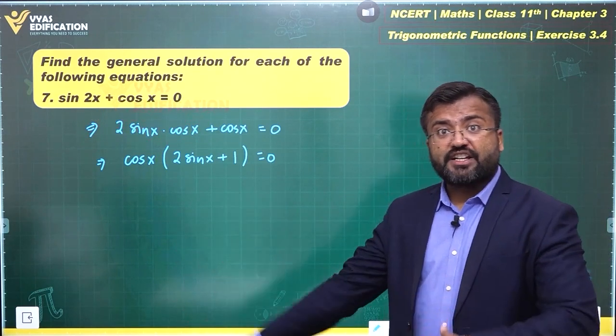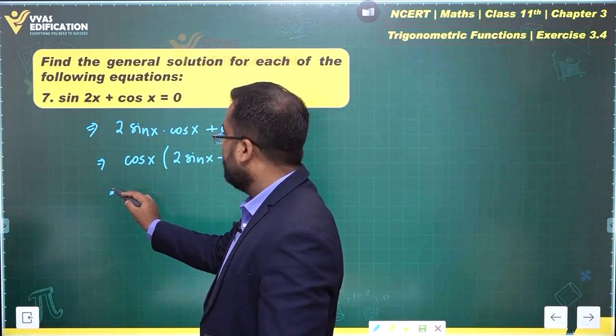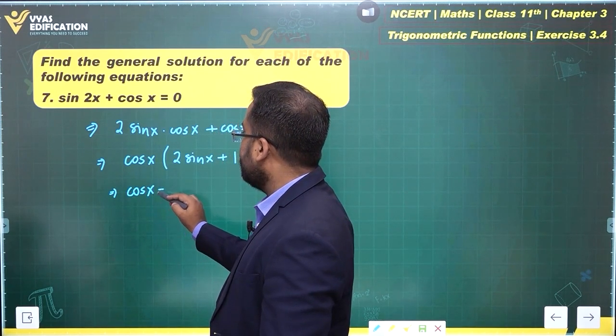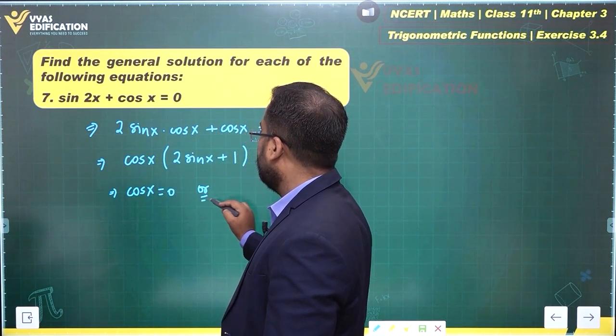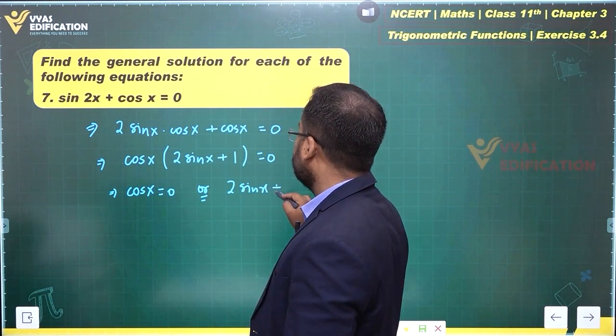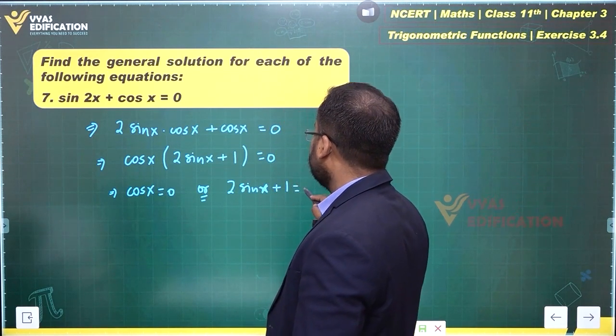And product of these two factors equals 0 implies that either cos x equals 0 or 2 sin x plus 1 equals 0.